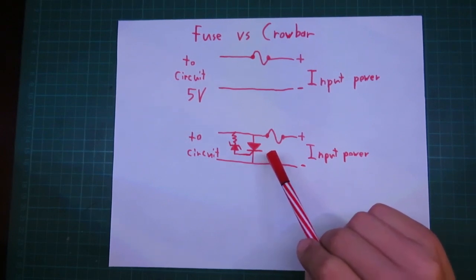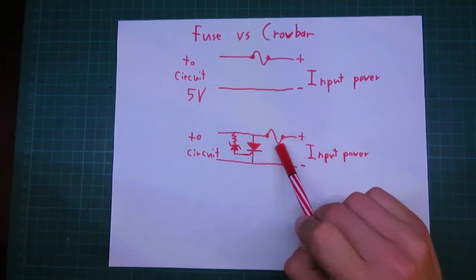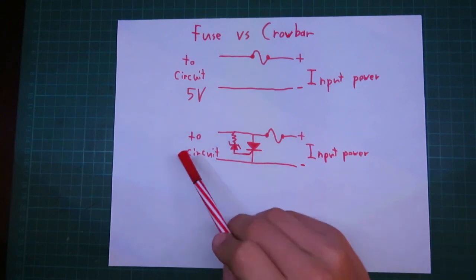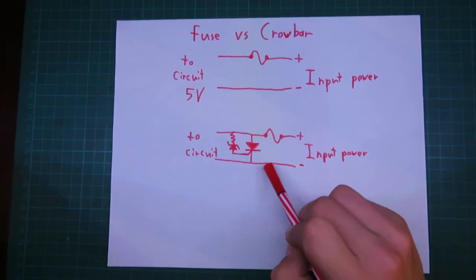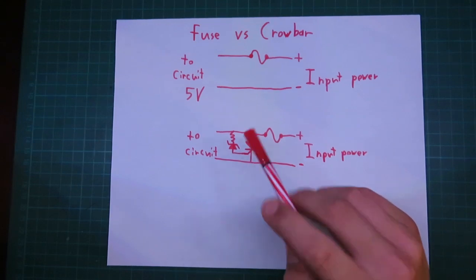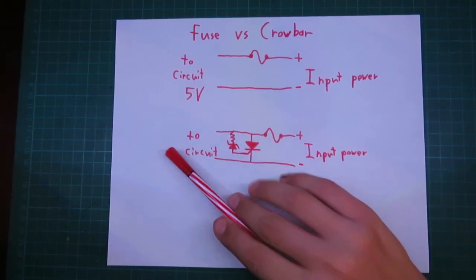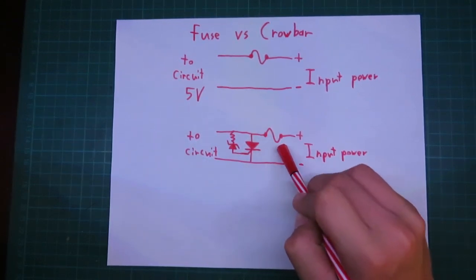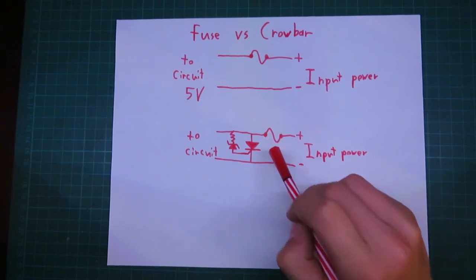Another advantage is, if you can short out your fuse, which are much cheaper than sometimes the components in your circuit, then this would be a very good circuit to use. You can save your components in your circuit while just blowing a fuse, and typically fuses are fairly cheap.